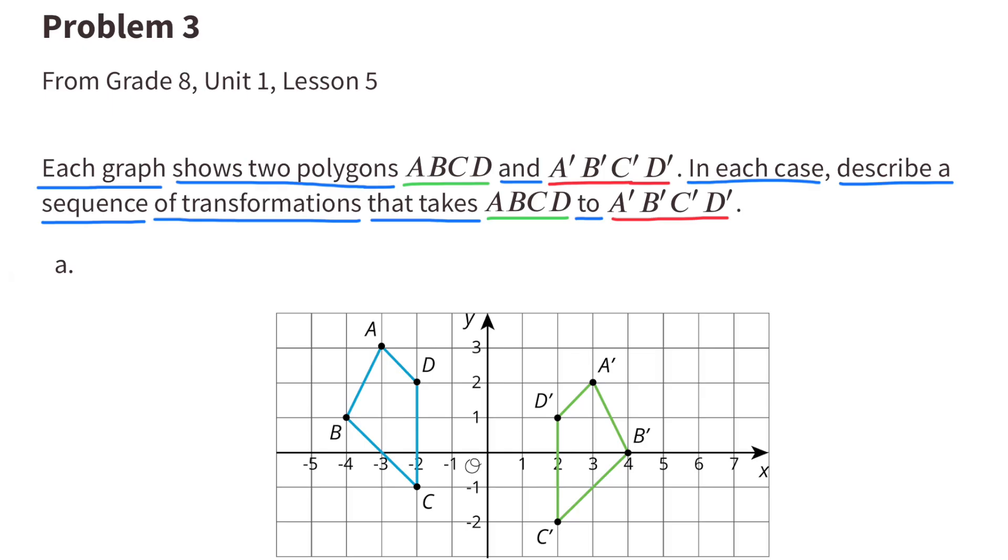Number 3. Each graph shows two polygons ABCD and A'B'C'D'. In each case, describe a sequence of transformations that takes ABCD to A'B'C'D'.